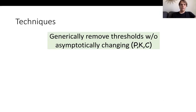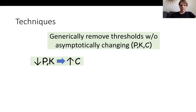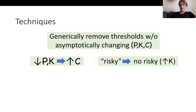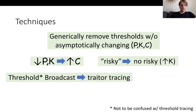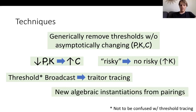To achieve these results, we develop a handful of new techniques. First, we show how to generically remove thresholds from any threshold traitor tracing system without asymptotically changing the parameter sizes. We also show a theorem that trades off the public and secret key sizes with the ciphertext size. We look at something called risky tracing and show how to remove the risk from risky tracing schemes at the cost of larger secret keys. We look at something we call threshold broadcast — not to be confused with threshold tracing — and show that threshold broadcast encryption can be used to build a traitor tracing system. Finally, we give some new algebraic instantiations from pairings.